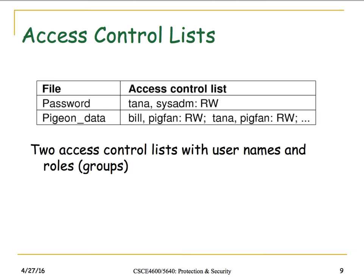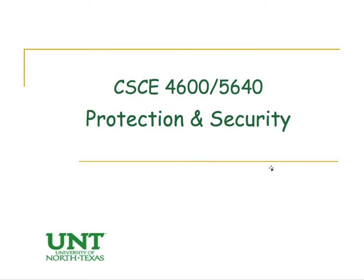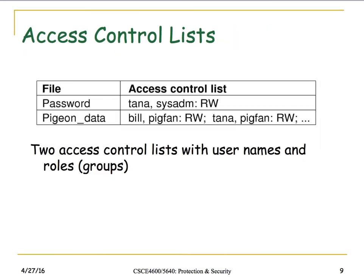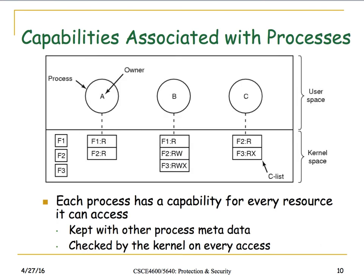The same approach can be done with usernames and roles. For example, a password file may only be accessible to system administrators. Certain data files might be accessible to users in a particular group — Bill might be in a group with read-write access — but in a different role he might have different permissions, and other groups may have different permissions as well.